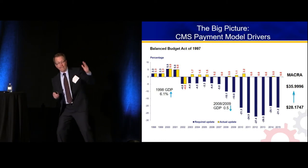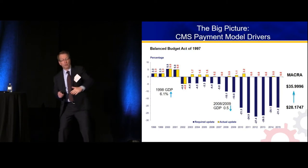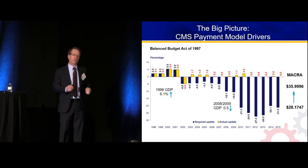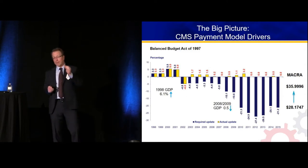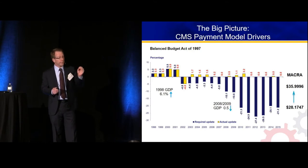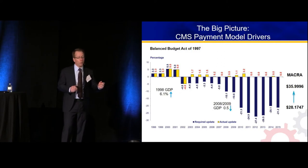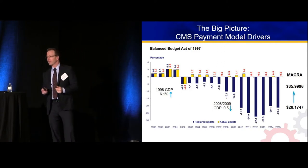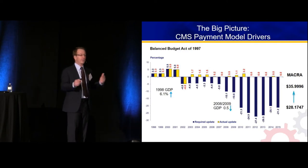That set in place a spiral of processes where ultimately Medicare spending had increased dramatically, the tax base had decreased dramatically, and in 2012 we had a 27% decrease on the books for the Medicare conversion factor. That's what each of us are paid per RVU by Medicare — right now it's about $36, and it would have been $28.17 had that passed.